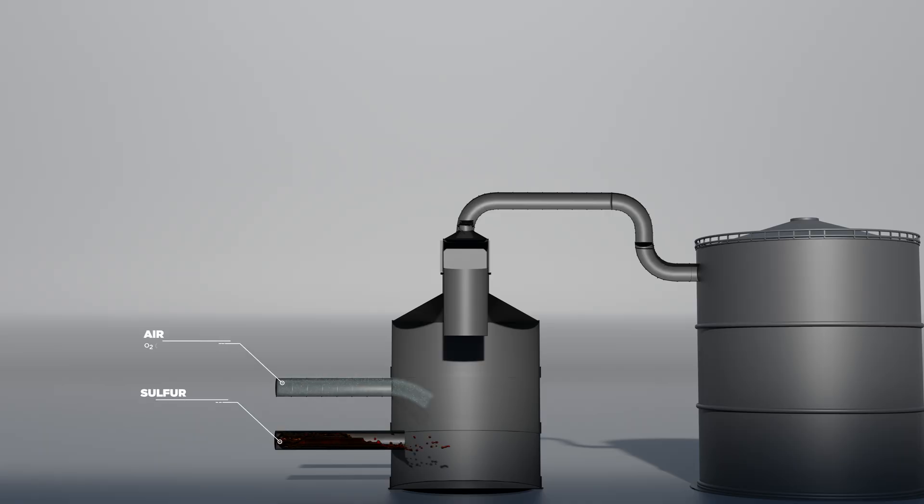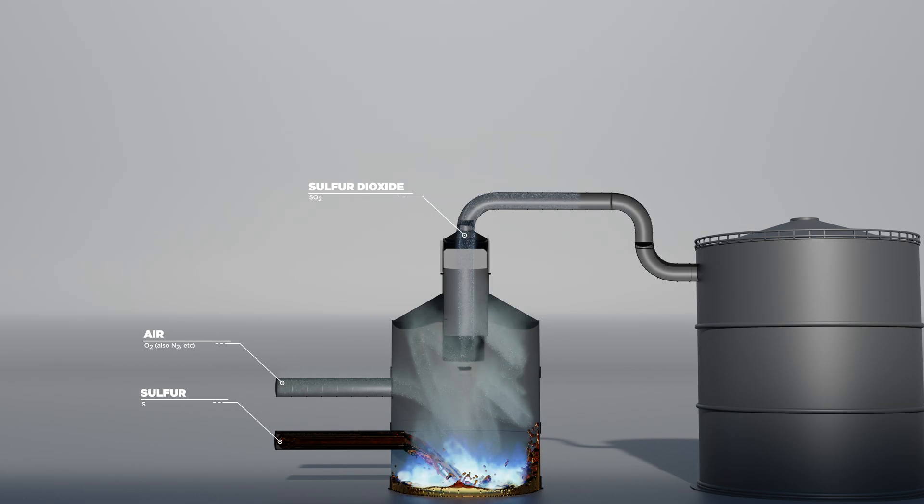The first step is to burn the liquid sulfur into oxygen containing air. The blue flame characterizes the combustion of sulfur, and the heat generated is used for energy applications. As a product, sulfur dioxide gas is obtained.